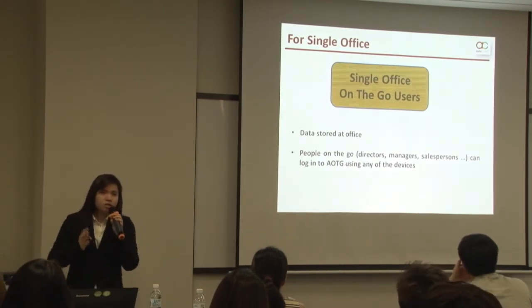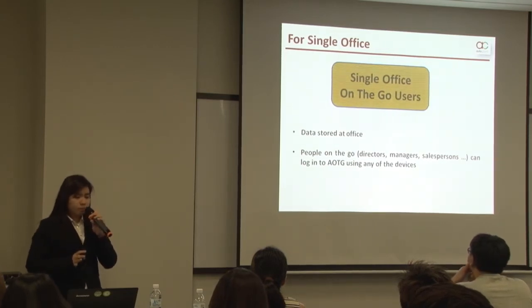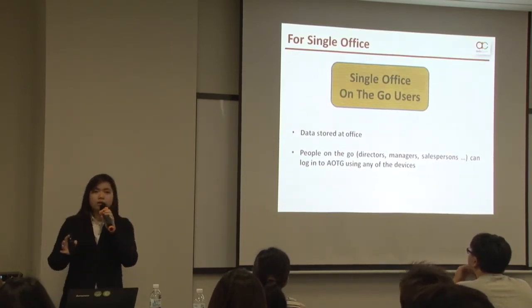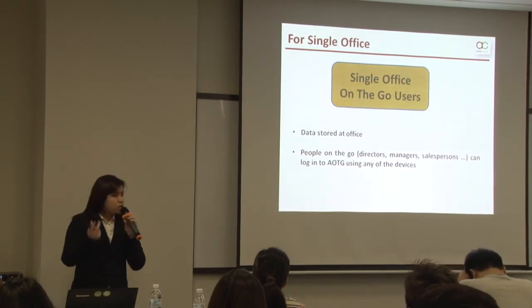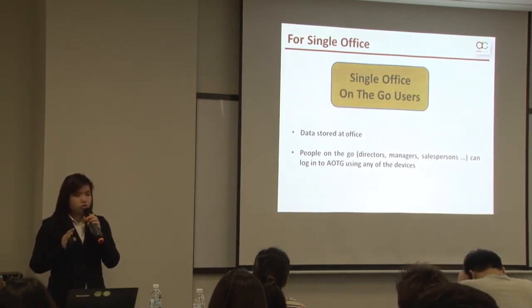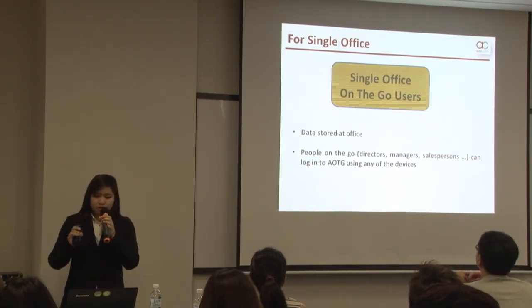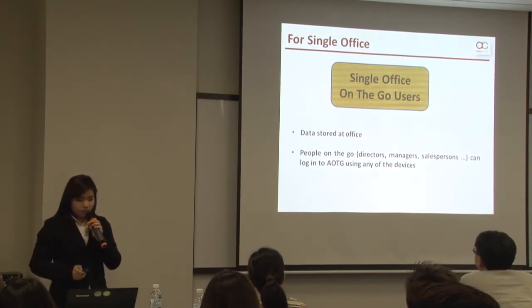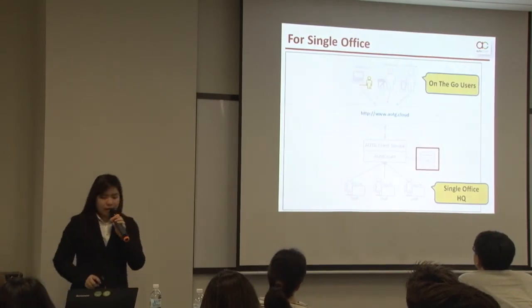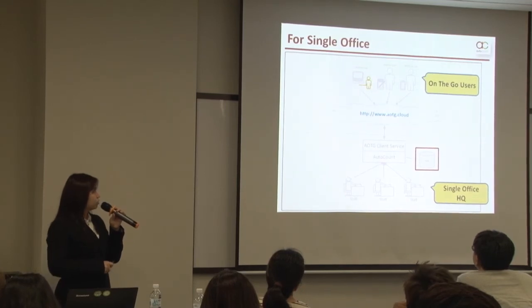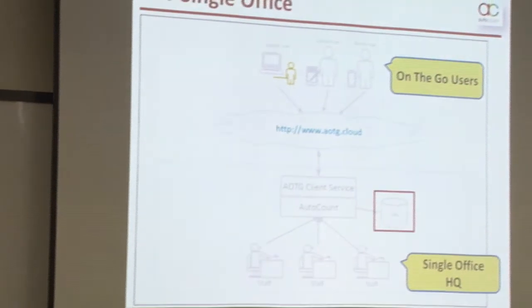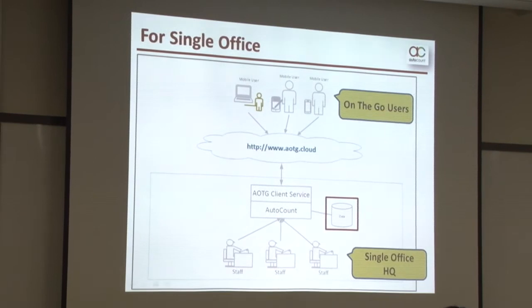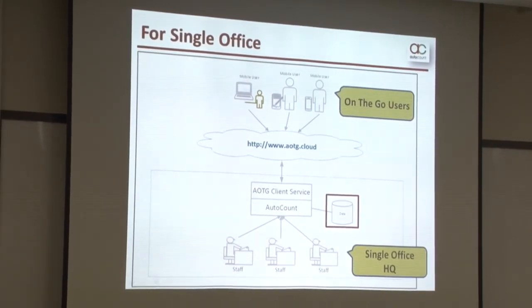Let me explain clearly for single office and on-the-go users. This first category can store data at HQ. People on the go — like directors, managers, and salespeople — can just log in to AOTG to perform transactions, and everything they perform will be saved on the HQ database using any device. People on the go log in to AOTG, access the AutoCount Accounting database stored at HQ, perform transactions, make enquiries, and generate reports.